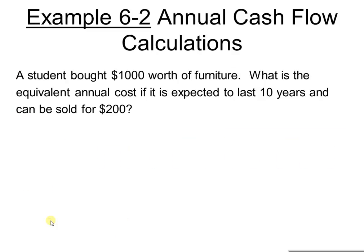Here's another example — example 6.2 from the book, which shows us how to perform annual cash flow calculations. A student bought $1,000 worth of furniture. What is the equivalent annual cost if it is expected to last 10 years and can be sold for $200? Notice that now we not only have the $1,000 initial cost, but we can also sell the furniture after 10 years for $200.